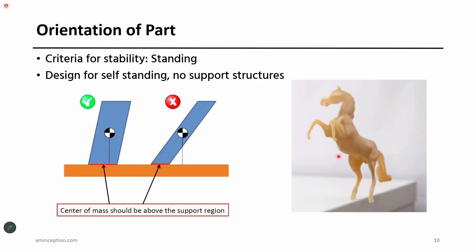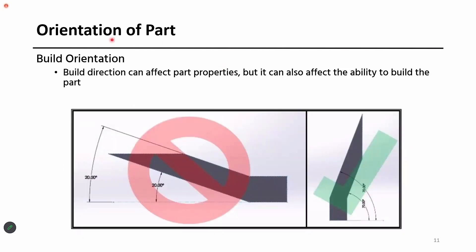It is important to know the different possibilities — what is the right one. How can we produce a good quality part in the first build? If you look at another build orientation example, the part can be placed vertically or horizontally. Placing it horizontally is not preferred because it requires a lot of support structures on the overhanging surface. If you place it vertically, it doesn't need any support structures.